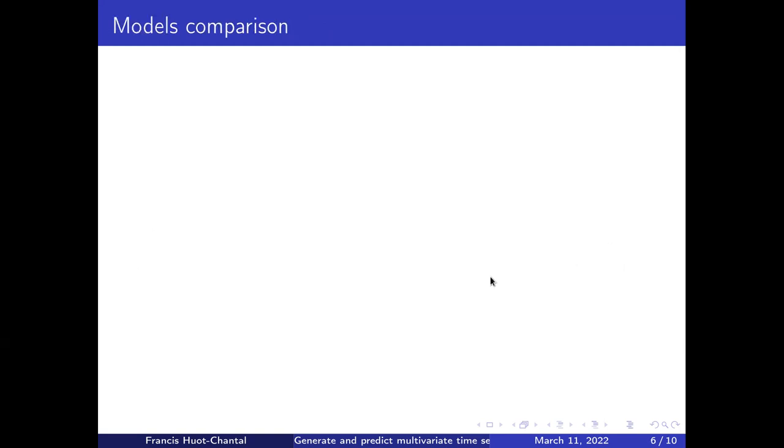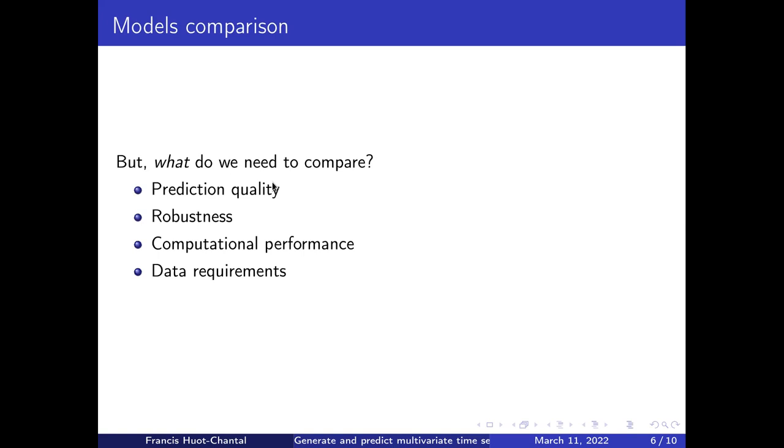So the objective today is to do model comparison. But what do we need to compare? First, the prediction quality on the representative data set could be thought as important. Then the robustness, in other words, how does the model behave when the experimental context changes? Also, computational performances could be important for certain applications. And finally, data requirements. For example, in a real-life application, it will be interesting to discriminate between the models according to the size of the available data set before diving into the details of the model.